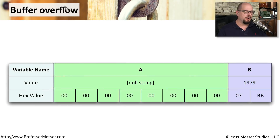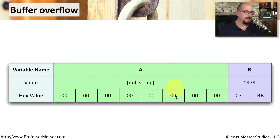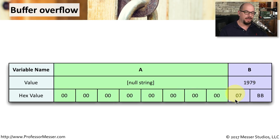Here's an example of a buffer overflow. This is an application that has been written to contain two different variables, variable A and variable B. You can see there has been some space allocated for each variable. Variable A has 8 bytes that it can use to allocate information, and variable B has two bytes available. There's already information saved into variable B — you can see the value is 1979.